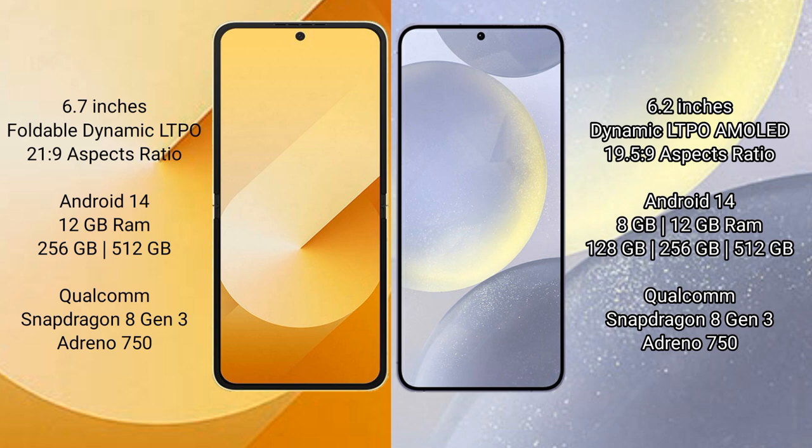Samsung Galaxy Z Flip 6 comes with 12GB RAM and 256GB or 512GB internal storage, Qualcomm Snapdragon 8 Gen 1 processor, and Adreno 730 GPU. Samsung Galaxy S24 comes with 8GB RAM and 128GB, 256GB, or 512GB internal storage, Qualcomm Snapdragon 8 Gen 3 processor, and Adreno 740 GPU.